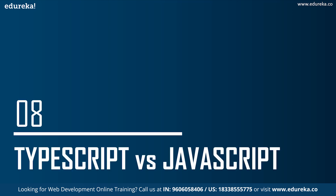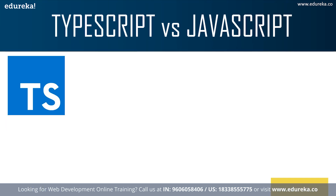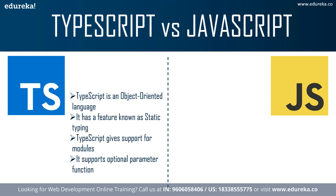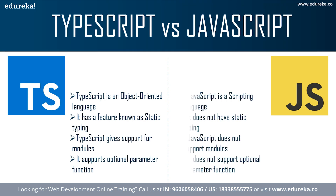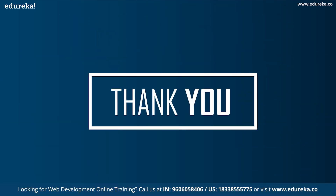Now let's look at the main differences between TypeScript and JavaScript. TypeScript is an object-oriented language whereas JavaScript is a scripting language. TypeScript has static typing, which JavaScript does not. TypeScript gives support for modules, whereas JavaScript does not support modules. Finally, TypeScript supports optional parameter functions, but JavaScript does not. Despite these differences, TypeScript is very similar to JavaScript and compiles down to it.